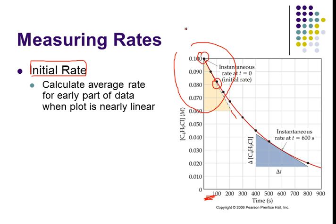After about 100 seconds, it starts curving. So an initial rate is still an average rate, but for the early part of the graph where it's linear. Chemists really like initial rates. We do a lot of experiments based on initial rates because it's very reliable — you haven't started to see a lot of slowing down — and it gives a good indication of how that reaction was initially behaving. Initial rates tend to be a lot of what people talk about.